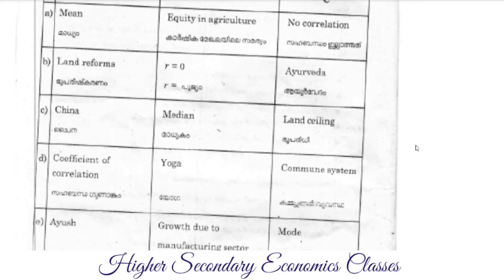Match the following: Column A includes Mean, Land Reforms China, Coefficient of Correlation, and Ayush. Column B includes Equity in Agriculture, R equal to 0, Median, Yoga, Growth due to Manufacturing Sector, No Correlation, Ayurveda, Land Sealing, Commune System, and Mode.